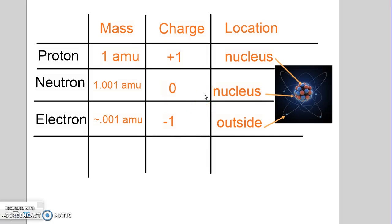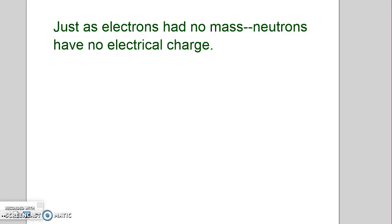Neutrons don't have any charge, so if we're interested in finding out about the charge of the atom, we don't care about neutrons. We can just completely ignore them. How many neutrons there are in an atom has nothing to do with the charge.